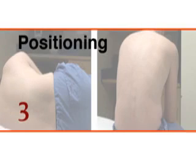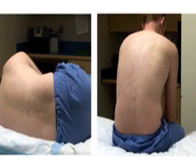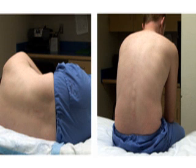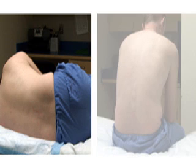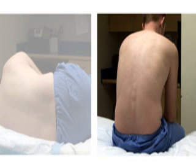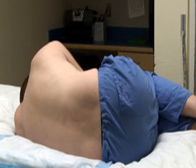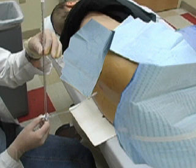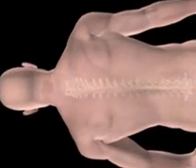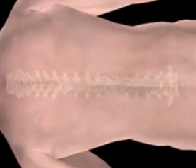Before you begin, you should explain the procedure along with potential risks and benefits to the patient, and obtain informed consent from the patient or his or her parent or guardian. After obtaining appropriate patient consent, the patient is positioned. Either the lateral recumbent position or a sitting position can be used. The lateral recumbent position is preferred to obtain an accurate opening pressure and to reduce the risk of post-puncture headache. Instruct the patient to assume a fetal position or to arch like a cat with the back flexed.